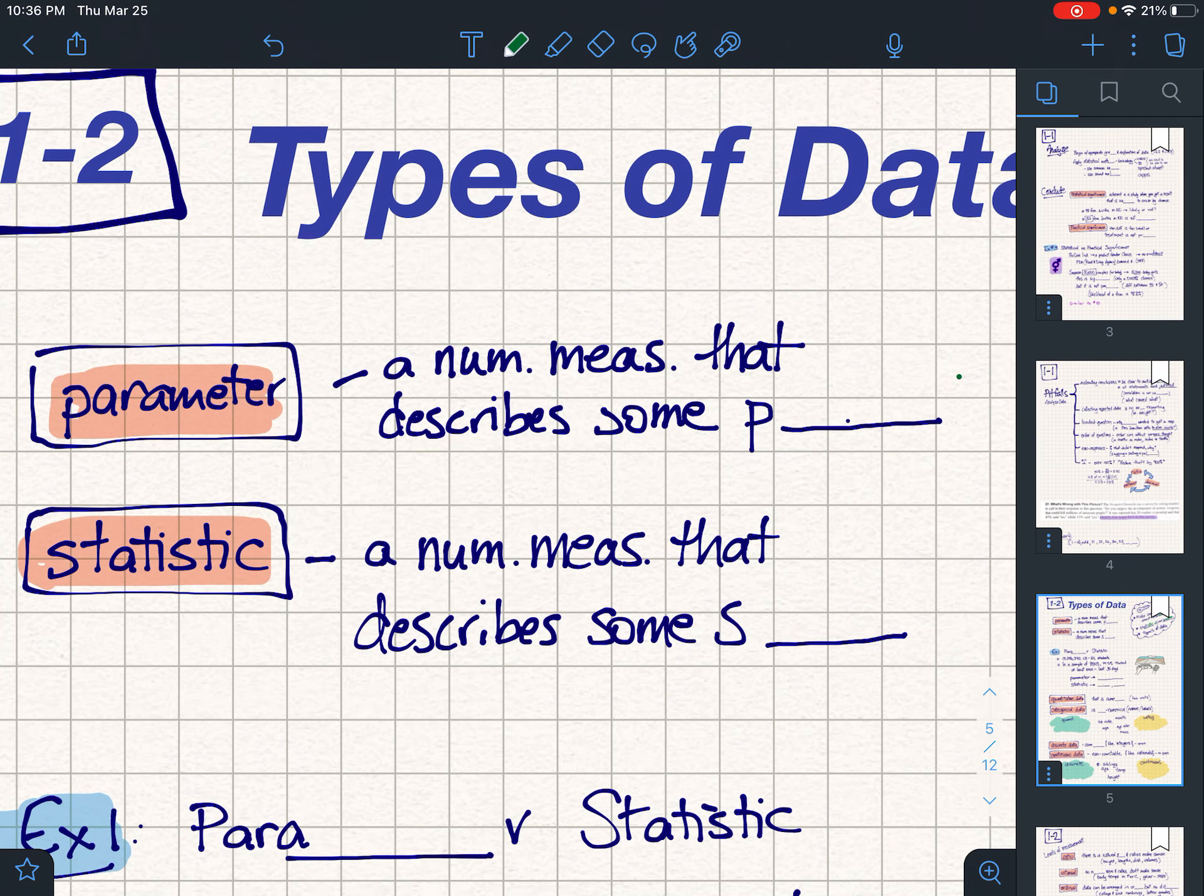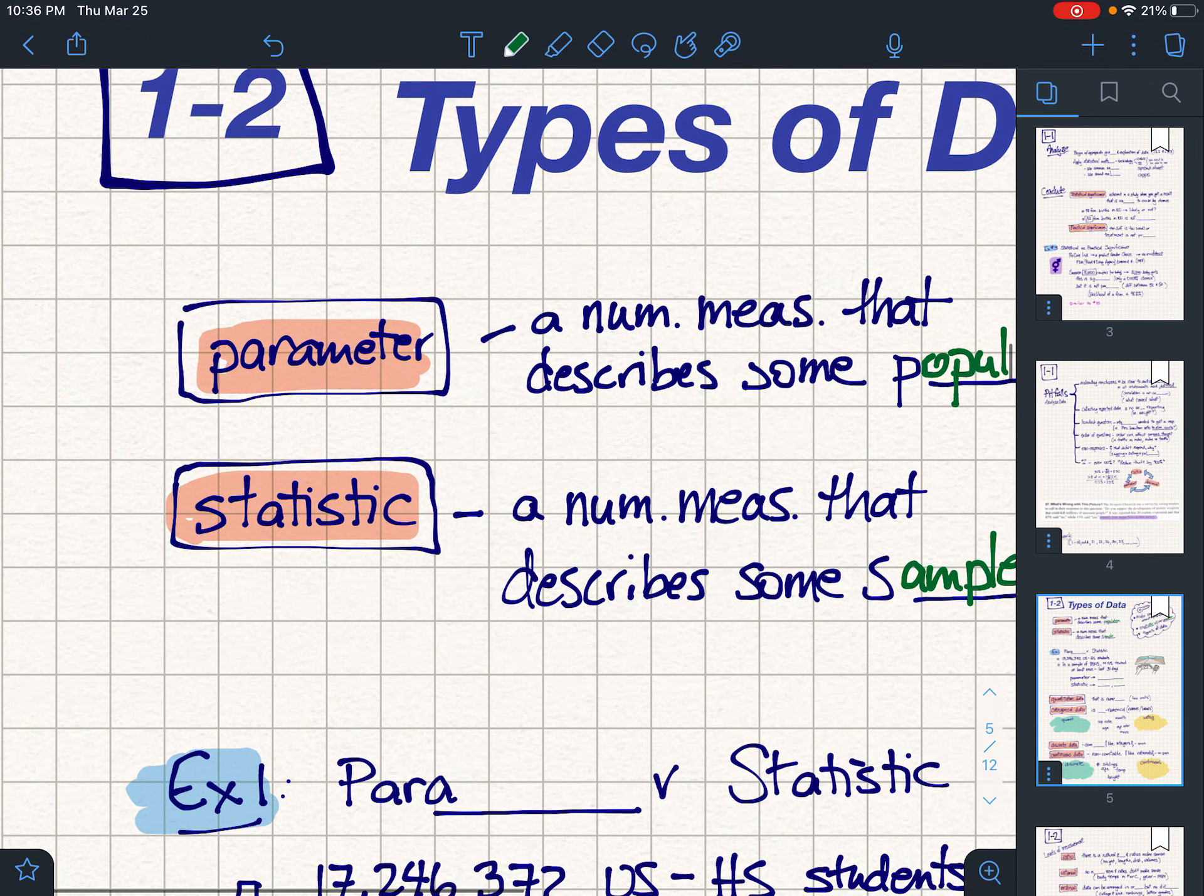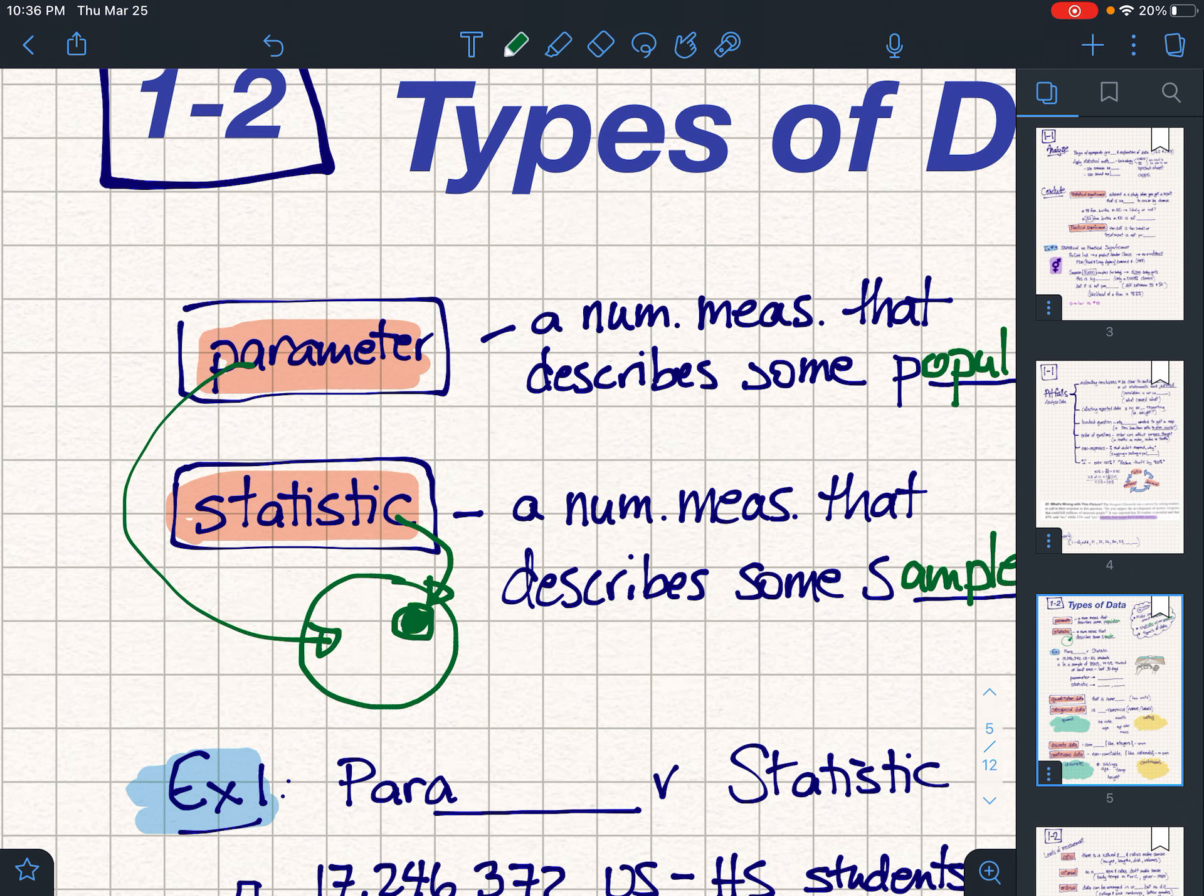Well, good thing you asked. The parameter is a number measurement that describes some population, whereas the statistic is the same thing but it only describes a sample. So again, not the Death Star. This is the world and then here's your little sample. A statistic will describe that, whereas the parameter will describe the whole thing.